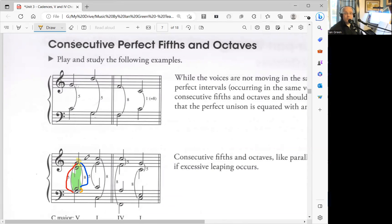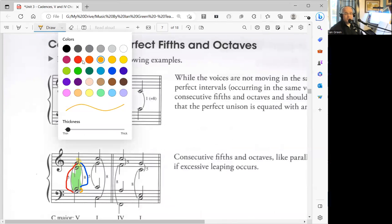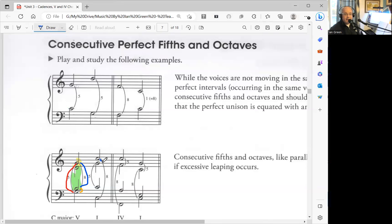So for example, if you wanted to check the interval between the soprano and tenor here, you would do that between the first chord and the next chord. And then you want to do the same thing for each of them. So here we have from B to G, which is a sixth, and here we have from C to C, which is an octave. So since those intervals are different, that's good.